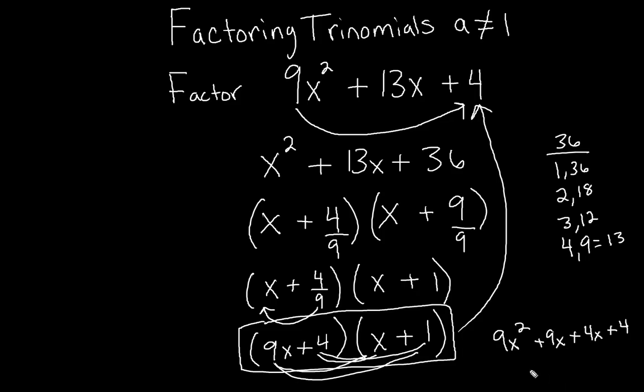And if we combine like terms, we get 9x squared plus 13x plus 4, which is what our original expression is. So we know this is the correct factored form.